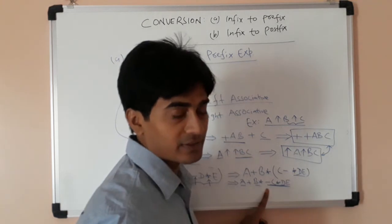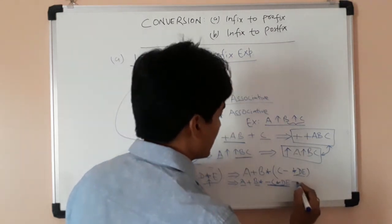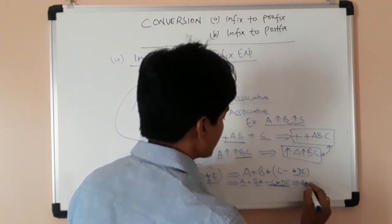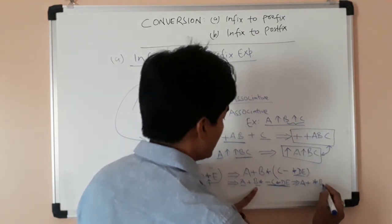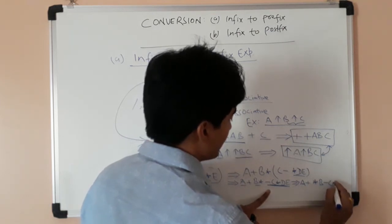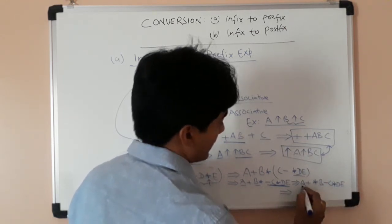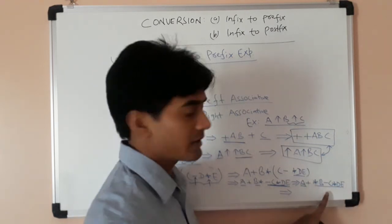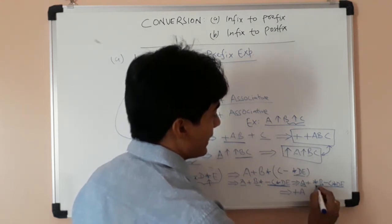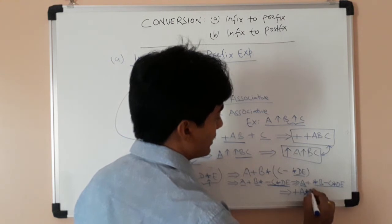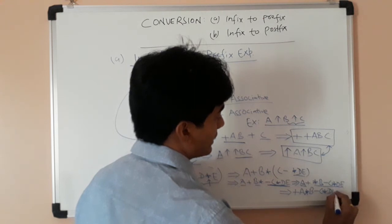Here plus and multiplication are the two operators. We first evaluate the multiplication operator, giving us star b minus c star d e. Then a is the first operand and that is the second operand, with addition as the operator. So addition appears before operand a and the second operand, giving the final prefix expression: plus a star b minus c star d e. This is the prefix expression of the given infix expression.